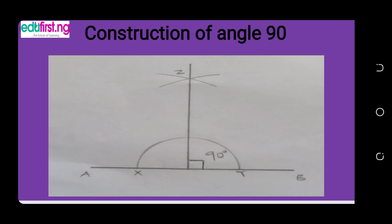Having drawn line AB, as you can see on the diagram, the next thing is to locate the centre or middle of this line. When you locate the centre, put your compass pin on the centre so that you can draw a semi-circle XY. Having drawn semi-circle XY, carry your pin and place it on X, then draw an arc of any radius of your choice upward to draw an arc at Z.